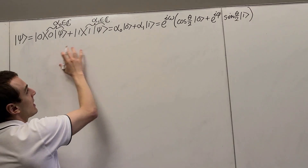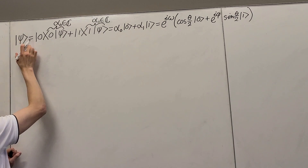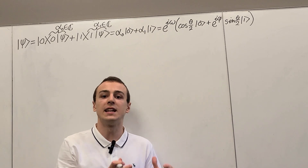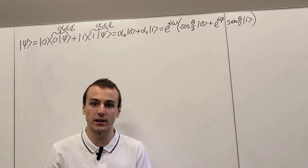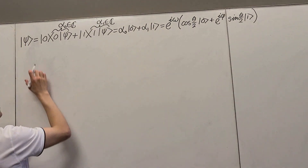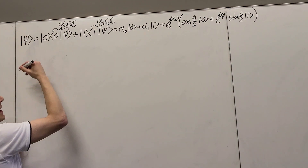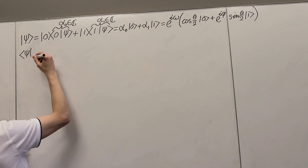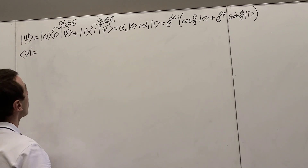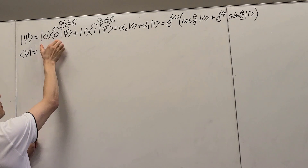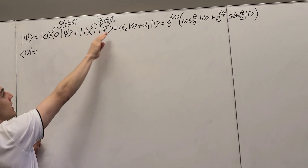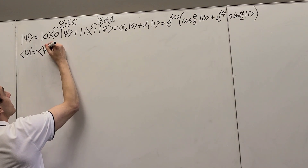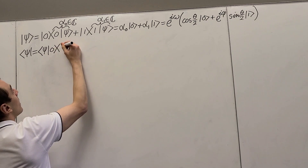So now we have everything we need for this ket. We also want the bra version, so we can construct the density operator or density matrix. Taking the bra version is the same as taking the Hermitian adjoint. When we're dealing with the bra, we have to act from the right. So we have the identity operator acting from the left up here, and now we want to act from the right — we have the bra version of psi acting from the right with each projector.